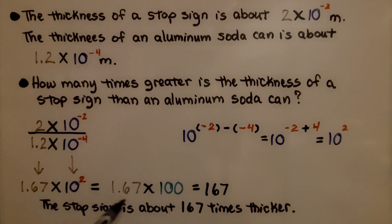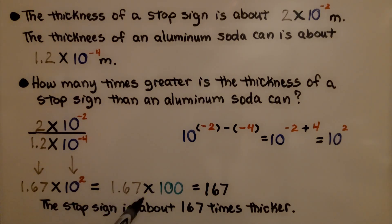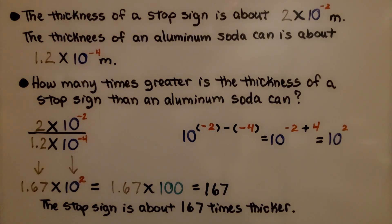Ten raised to the second power is one hundred — ten times ten. We have one and sixty-seven hundredths times one hundred, which equals one hundred sixty-seven. The stop sign is about one hundred sixty-seven times thicker than the aluminum soda can.